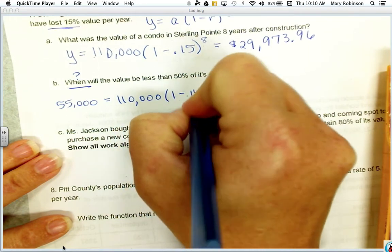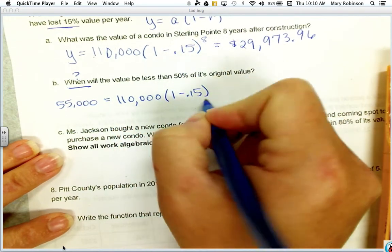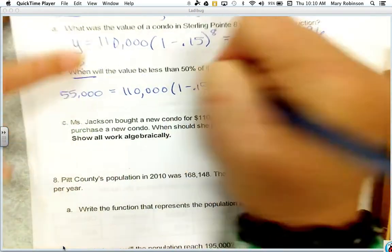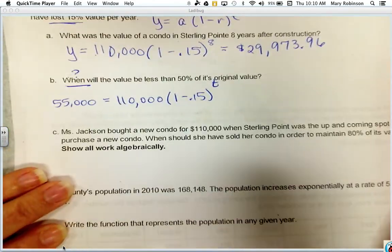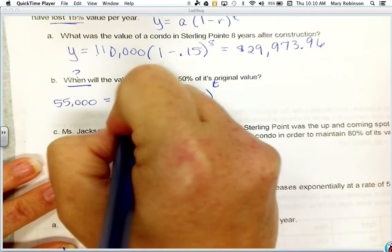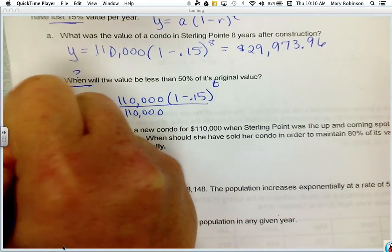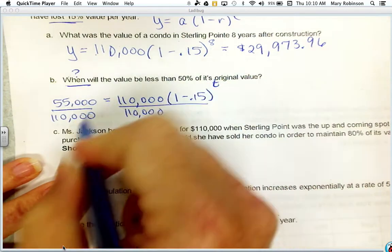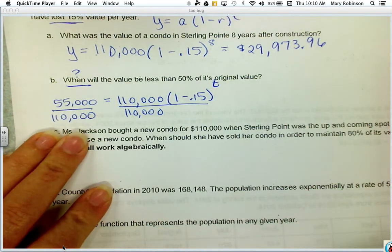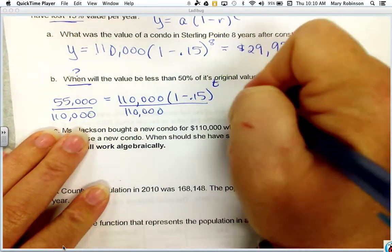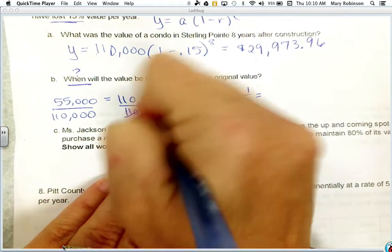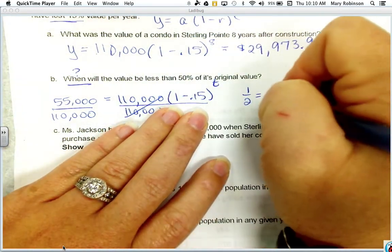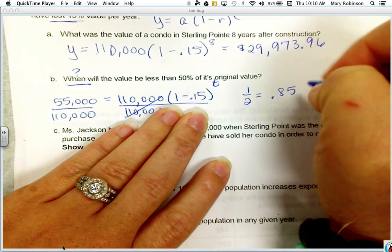So 1 minus 0.15 - of course, we could put 0.85 here - but what we're trying to solve for is time. So now we want to use our skills for solving for an exponent. First step would be to isolate your exponential. 55,000 divided by 110,000, it should be a half. I'm going to go ahead and reduce this, and that's 0.85 to the T.